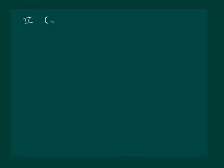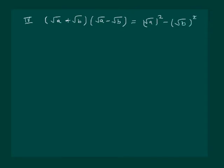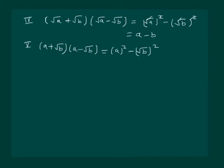Our fourth rule states that for a and b greater than 0, if we have under root of a plus under root of b, multiplied by under root of a minus under root of b, it is equal to under root of a whole squared minus under root of b whole squared, and the square root sign gets cancelled giving us a minus b. On similar lines, a plus root b into a minus root b gives us a squared minus b.